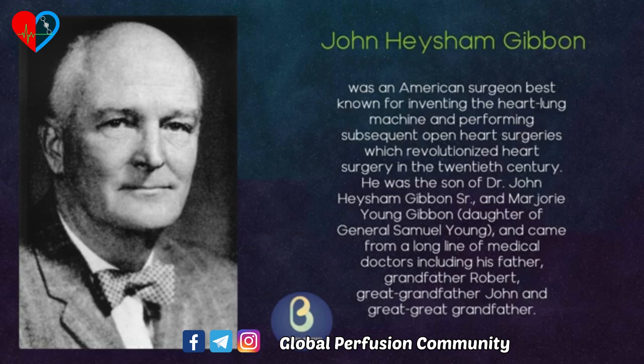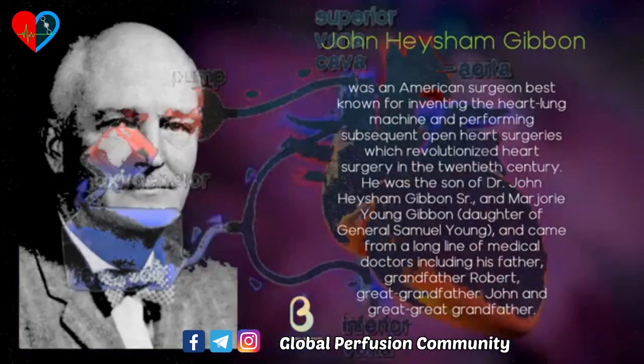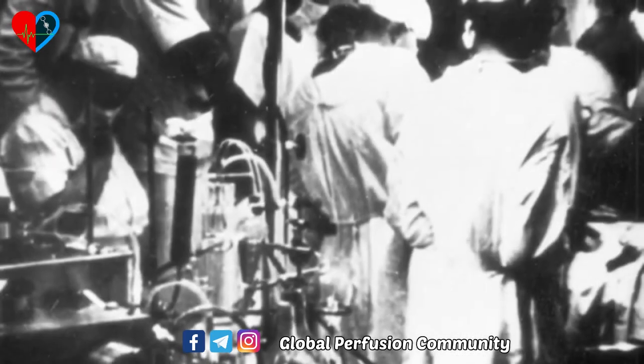He began to investigate the possibility of building an external device that could do the job of the heart and lungs for short intervals. Gibbon and his wife carried out their initial research using cats, and by 1935 they had developed a machine that could replace the function of a cat's heart and lungs for 20 minutes. These early animal experiments allowed Gibbon to test different types of pumps and oxygenators to improve performance. However, the machine damaged blood cells and most cats lived no longer than 2-3 days after surgery.